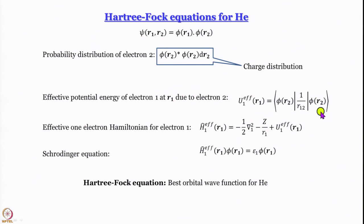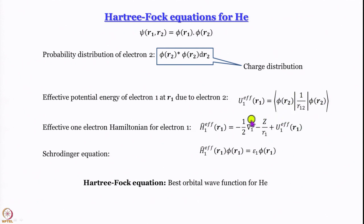This expression means that phi* times phi is essentially the charge density, and the separation is r12, so that is the interaction between a charge cloud and a point charge — the electron-electron repulsion. Electron 1 is taken as a point at r1, electron 2 is taken as a cloud. You get similar expressions for ionic atmosphere in solutions of electrolytes. Using this, we wrote the effective one-electron Hamiltonian for electron 1.